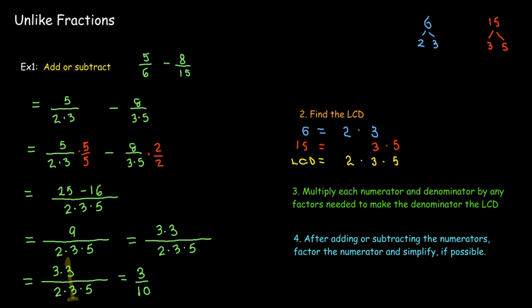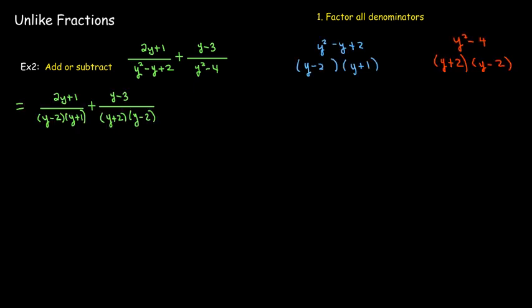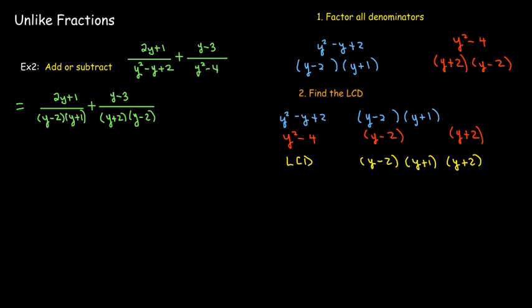Now with algebraic fractions, we'll actually leave the denominator and the numerator in factored form. Alright, so let's look at an example with algebraic fractions. So the first step is to go ahead and factor all of the denominators. And then I rewrite my addition using the factored form. Now I find the LCD. And so again, I have a y minus 2 and a y plus 1. Then y minus 2, y plus 2.